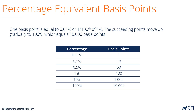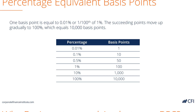0.01% is one basis point, and we move all the way along until 100% is equal to 10,000 basis points. So you can see how basis points are very useful when referring to small percentages.